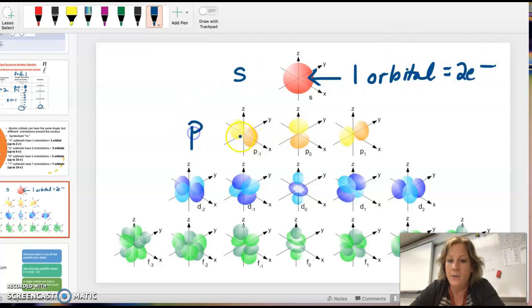P, here's those P shapes. There's three ways it can go because there's X, Y, and Z direction. So three orbitals. Each orbital could hold up to two electrons, so you could have up to six electrons.